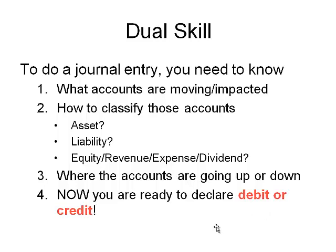In order to do a journal entry, which requires debits and credits, you can't rush to the debit or credit. You have to go through a sequence — a skill. The first thing to do is figure out which accounts are moving, which accounts were impacted by that transaction. In the beginning, when you don't know the classic accounts for revenue, expenses, assets, and liabilities, you may understand something moved but not know the name of it — that comes with practice. Figure out which accounts went up: did cash go up? Did revenue go up?